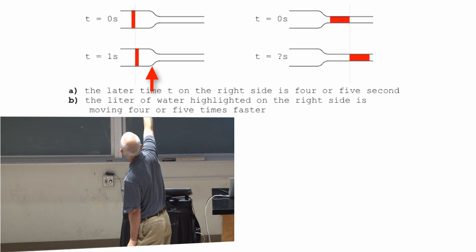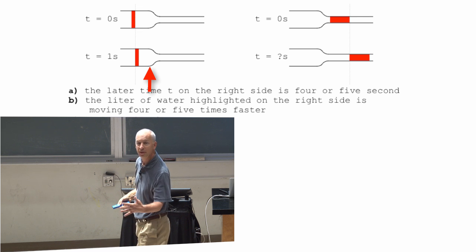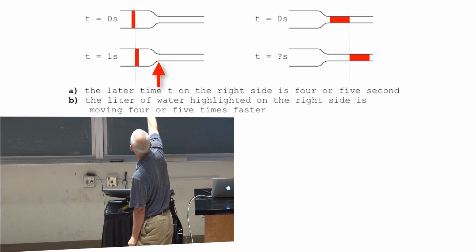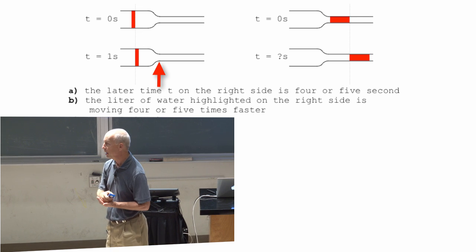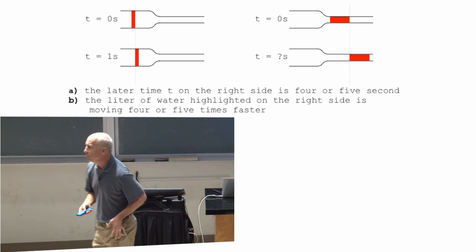So all the water along here is going to be moving at constant speed. Here, the cross section starts to get smaller and smaller and smaller. So right here, the water's going to start moving faster and faster and faster. And by the time it gets to here, it's going to be a constant speed the whole time. Because again, the cross sectional area is constant. So what you need,